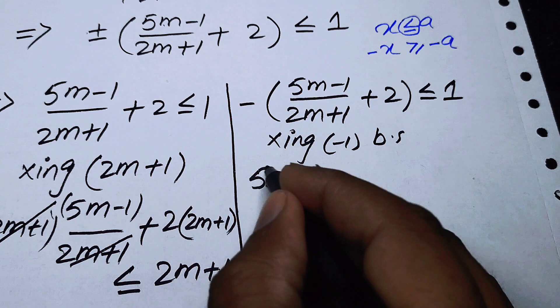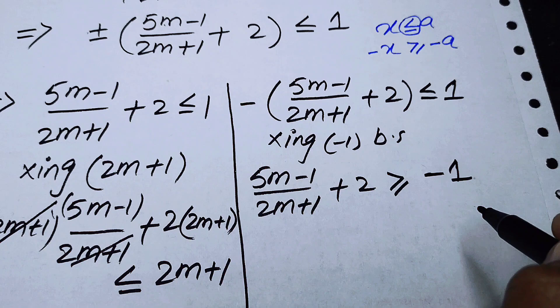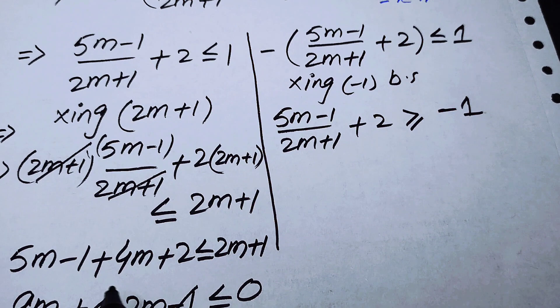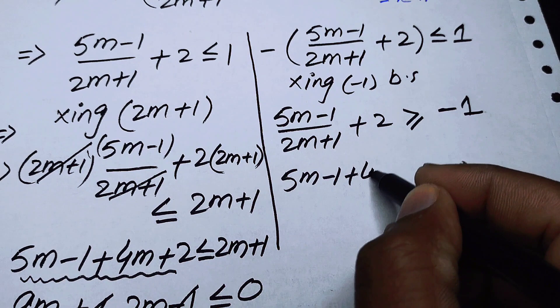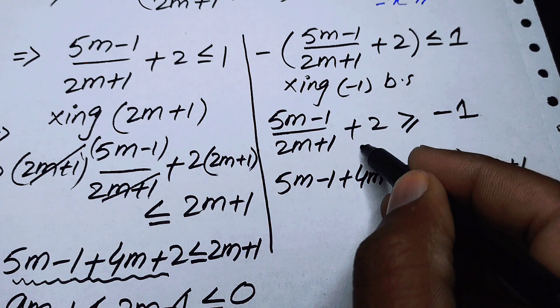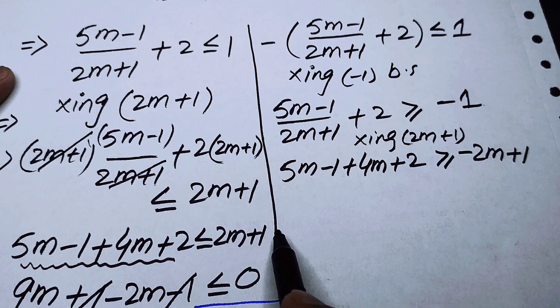After multiplying by −1 and reversing the inequality, we get (5m − 1)/(2m + 1) + 2 ≥ −1. We again multiply both sides by (2m + 1), the (2m + 1) cancels, and we obtain: 5m − 1 + 4m + 2 ≥ −(2m + 1).